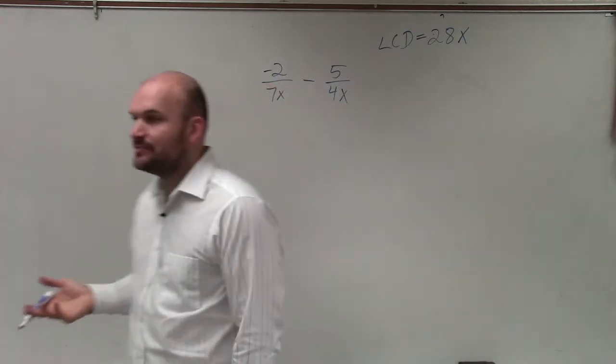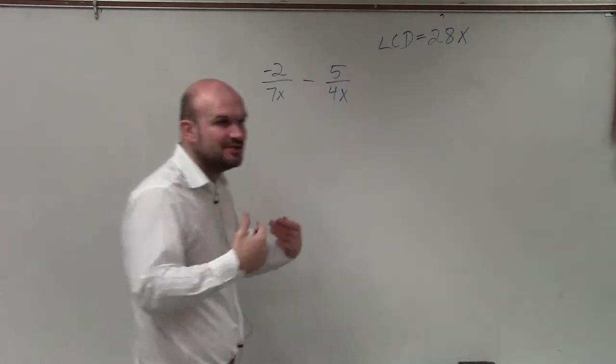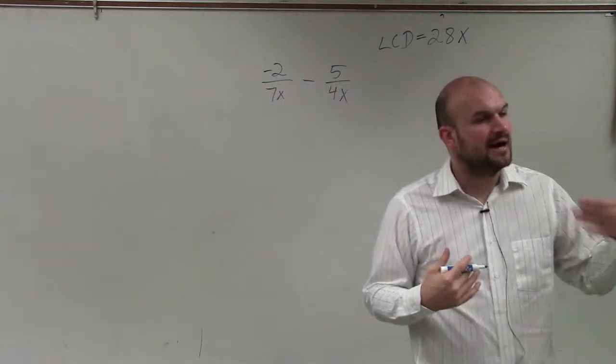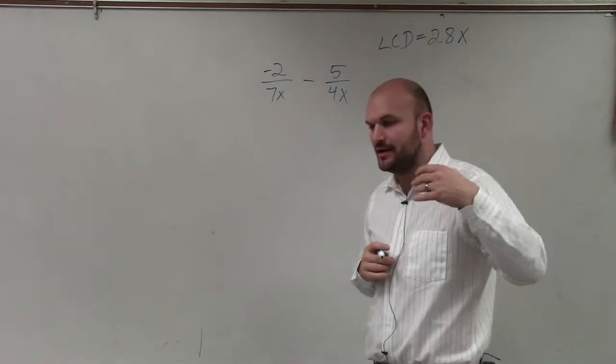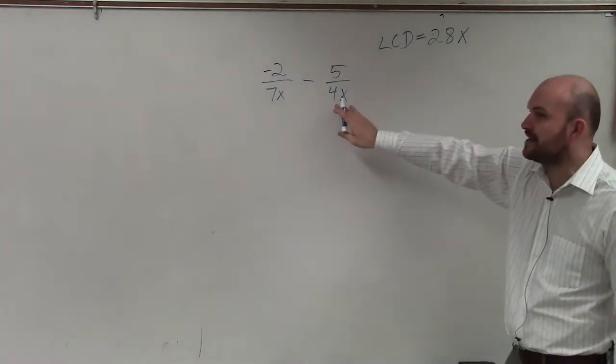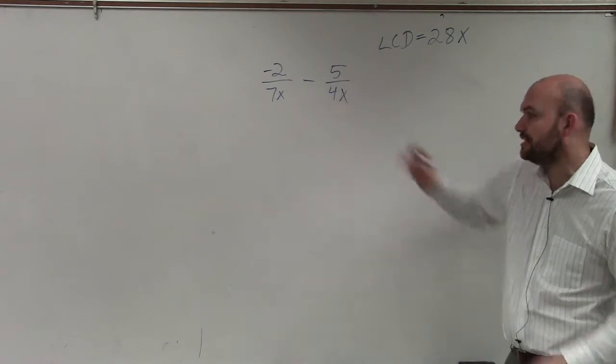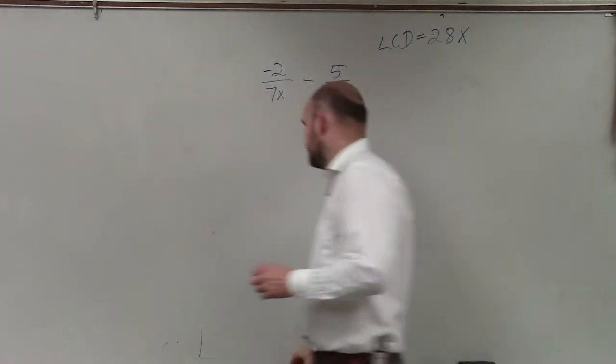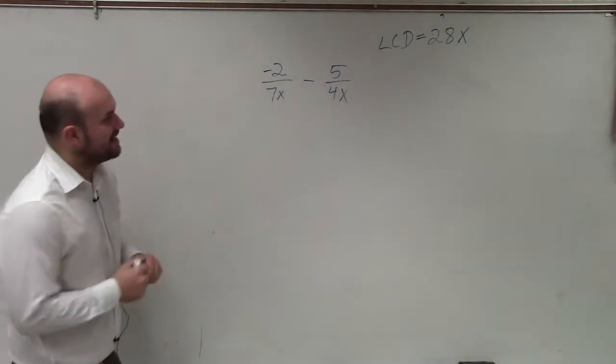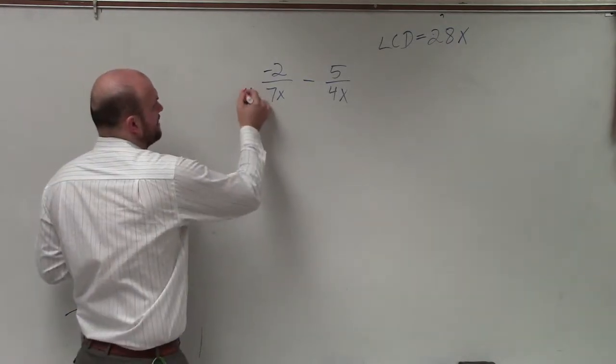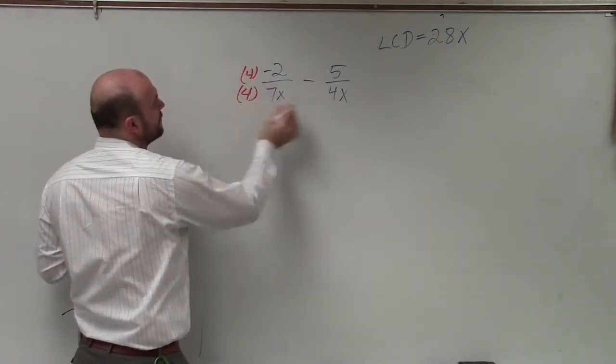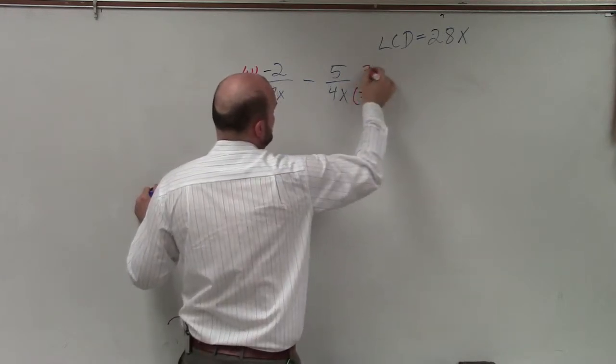So now, all I simply need to do is multiply each of my fractions by another fraction that's going to produce my LCD in the denominator. So from 7x to get that to be 28x, I'm going to multiply by 4 over 4. And for 4x to be 28x, I'm going to multiply by 7 over 7.